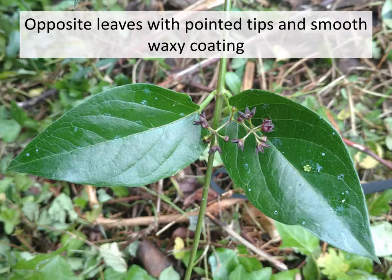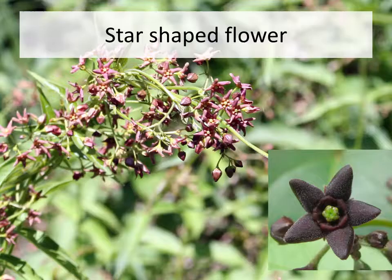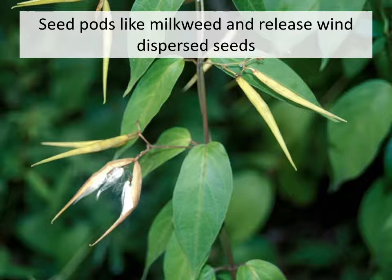Swallowort is a vine with leaves that grow opposite each other. The leaves come to a pointed tip and have a smooth waxy coating. Both black and pale have star-shaped flowers. If you look closely, black swallowort has a shorter, thicker flower than the pale does.